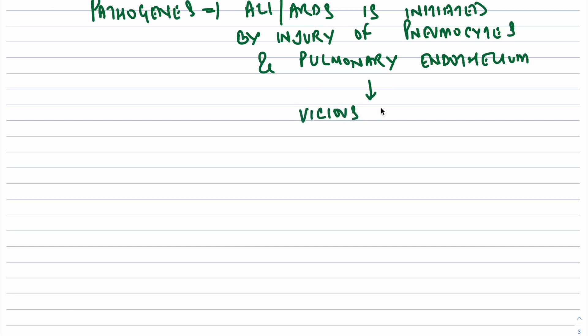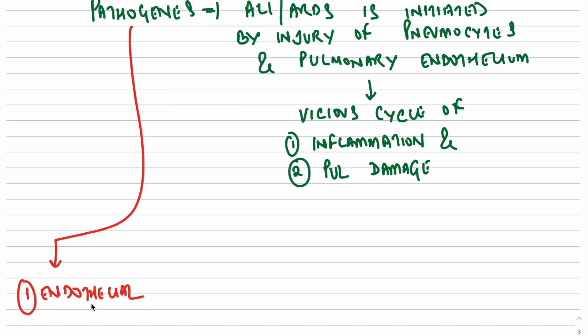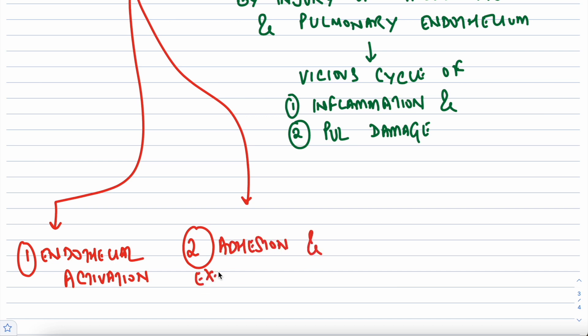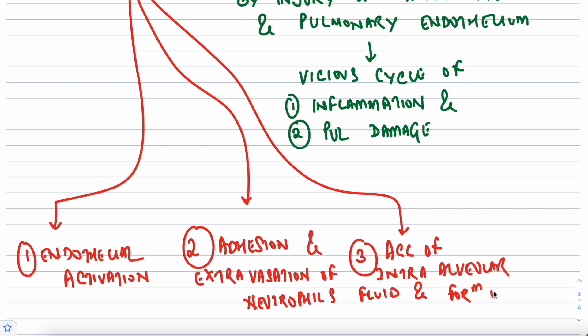The pathogenesis of acute lung injury or ARDS: ALI or ARDS is initiated by injury of pneumocytes and pulmonary endothelium, setting in motion a vicious cycle of inflammation and pulmonary damage. The pathogenesis can be discussed under four important headings: endothelial activation; adhesion and extravasation of neutrophils; accumulation of intra-alveolar fluid and formation of hyaline membranes; and resolution of injury.